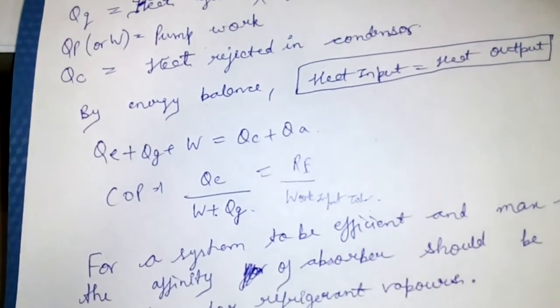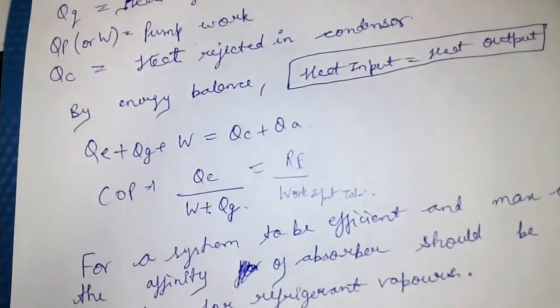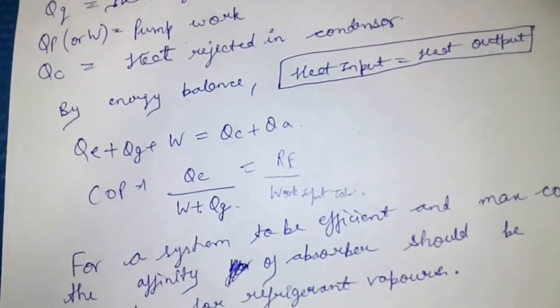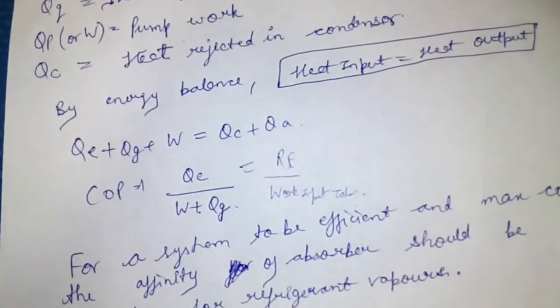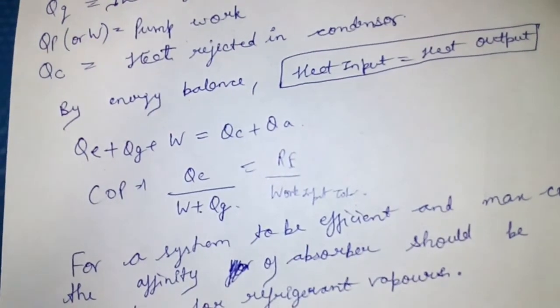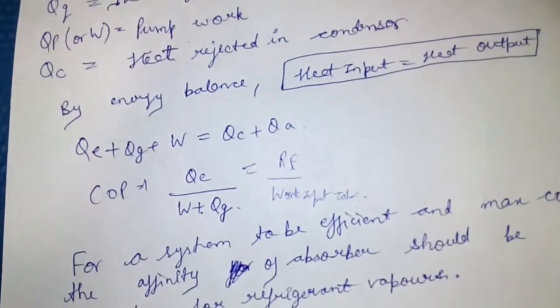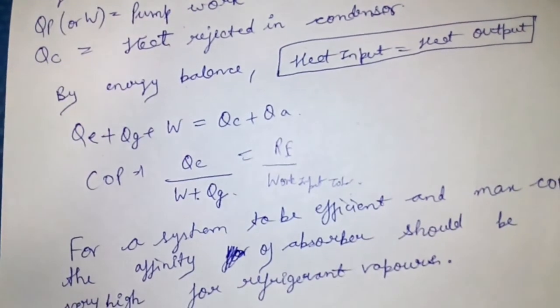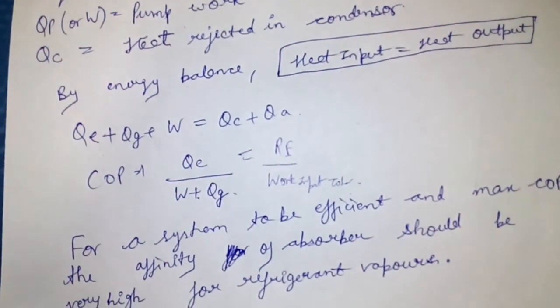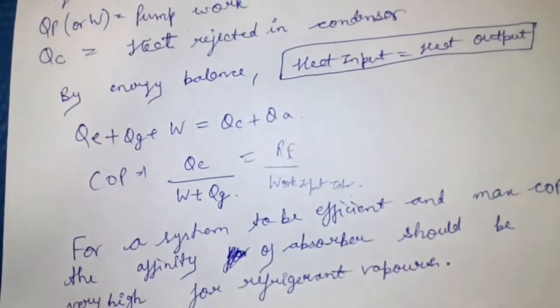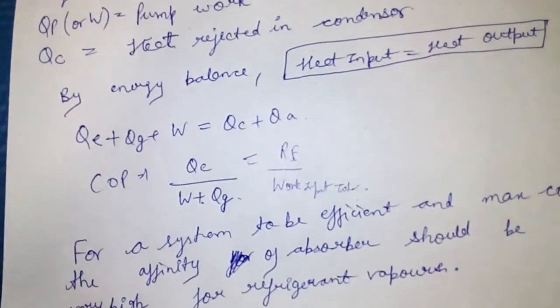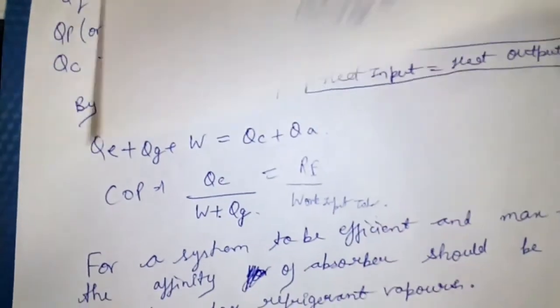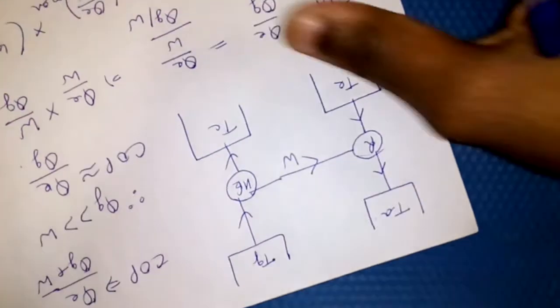The absorbent should have low affinity for the refrigerant at high temperature so that the refrigerant can be easily separated on applying heat energy and raising the temperature. Here the refrigerant concentration decreases and this is called weak solution. The weak solution is then brought to the same absorber pressure via pressure reducing valve.